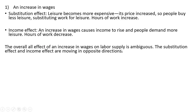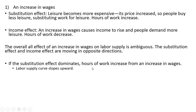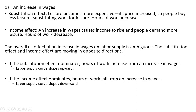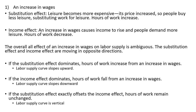The overall effect of an increase in wages on labor supply is ambiguous — it could go up, go down, or stay the same in terms of hours of work. The substitution effect and income effect are moving in opposite directions. If the substitution effect dominates, hours of work increase and the labor supply curve slopes upwards. If the income effect dominates, hours of work fall and the labor supply curve slopes downwards — some call it a backward-bending labor supply curve. If the substitution effect exactly offsets the income effect, hours of work remain unchanged and the labor supply curve is vertical.